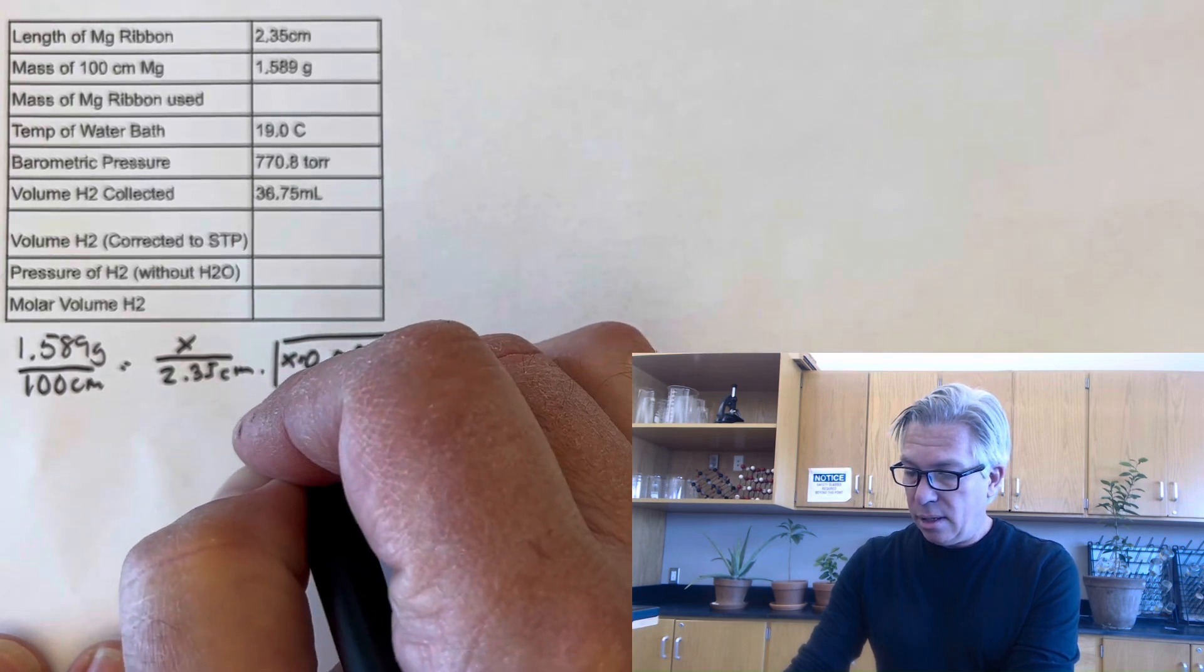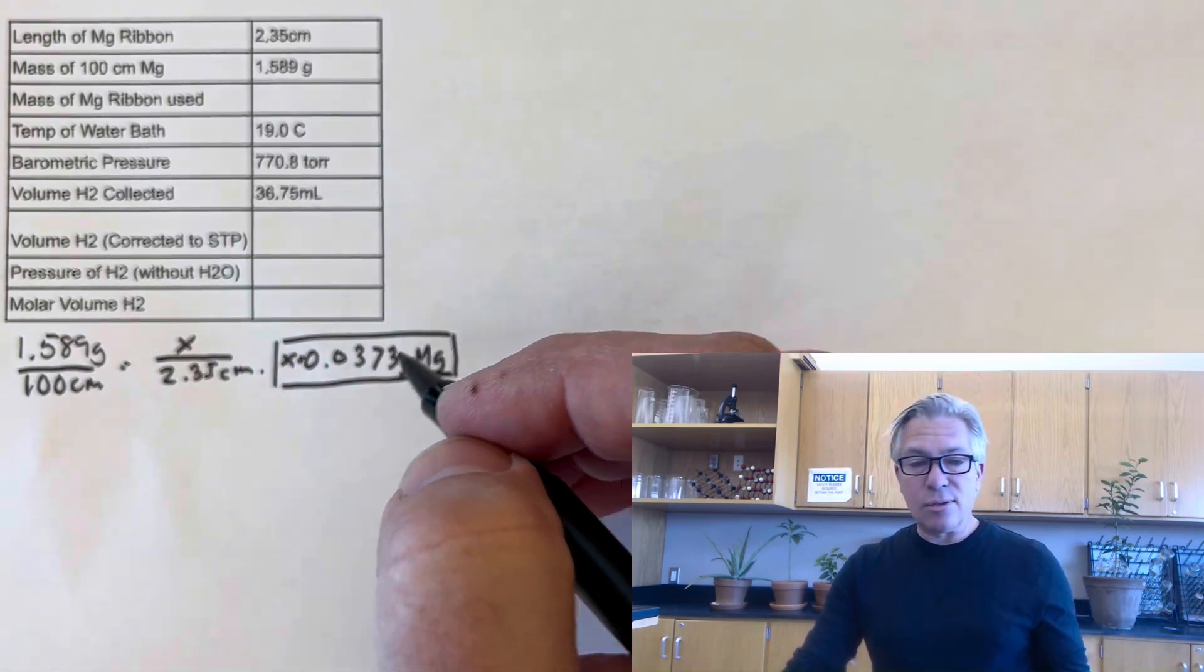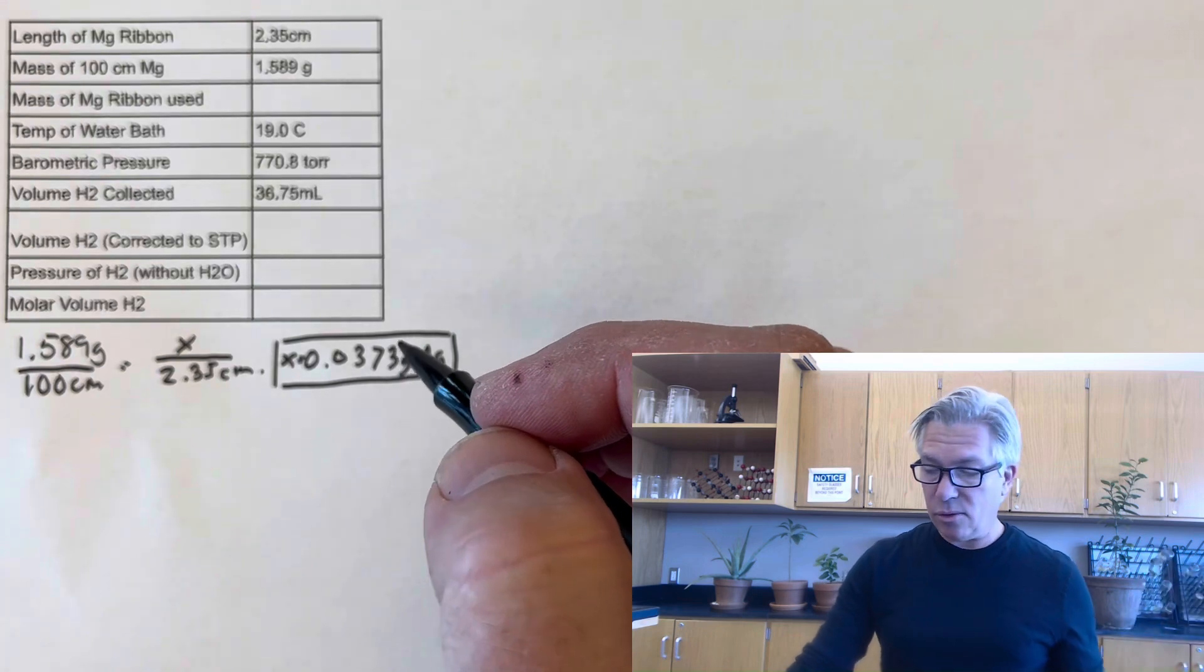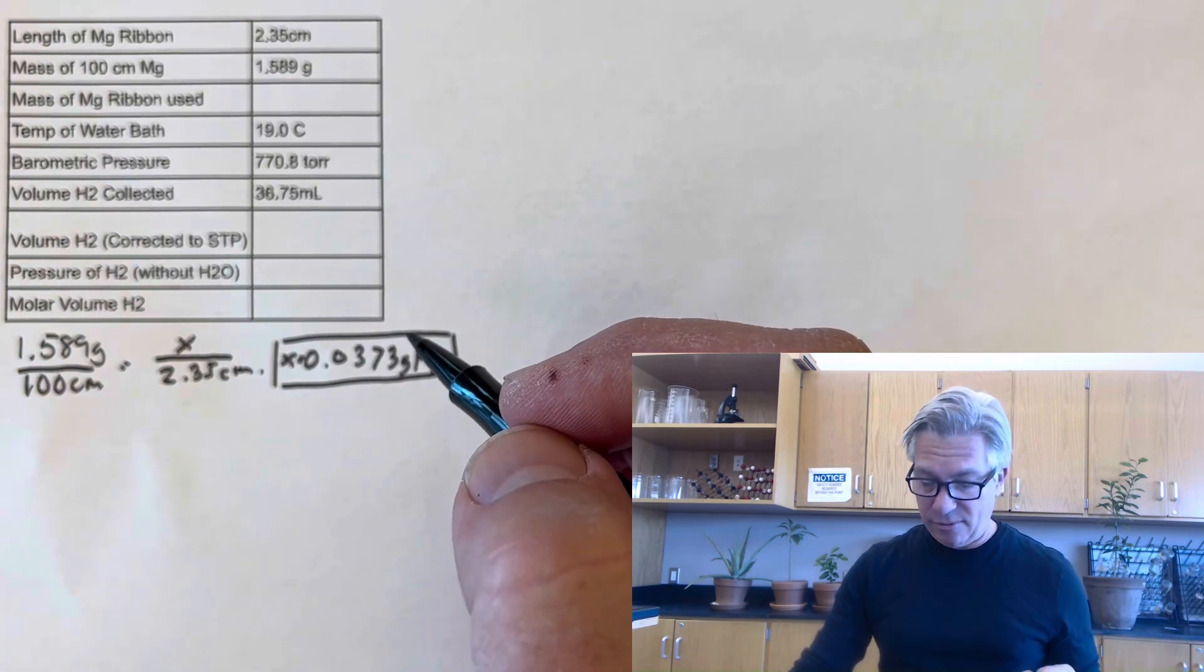Okay, so you just have to get that. And reminder that this is three significant digits, whereas my balance would have only given me two sig figs. So I'm feeling good about that.